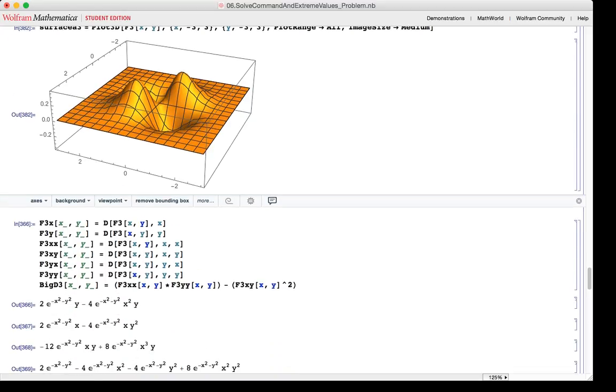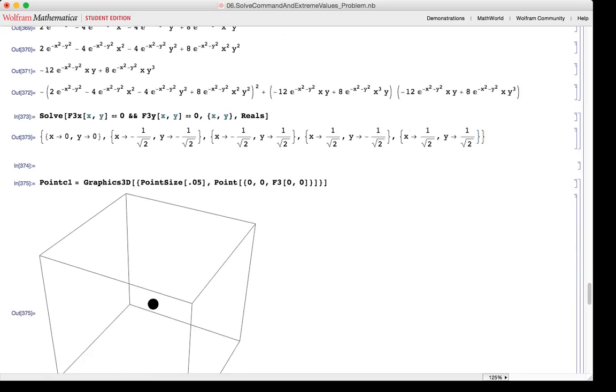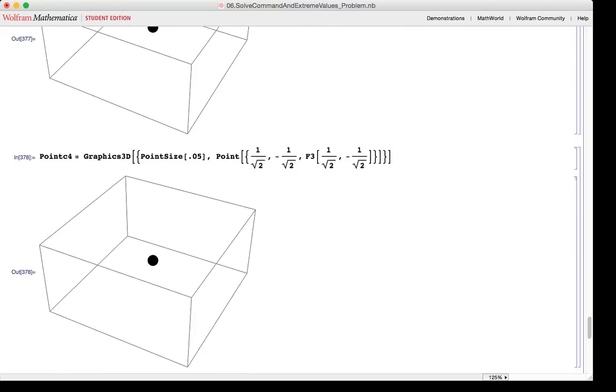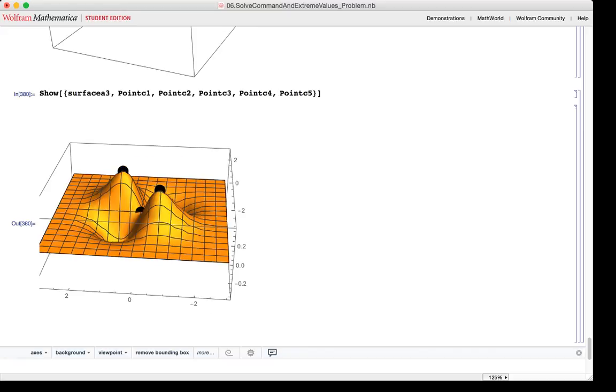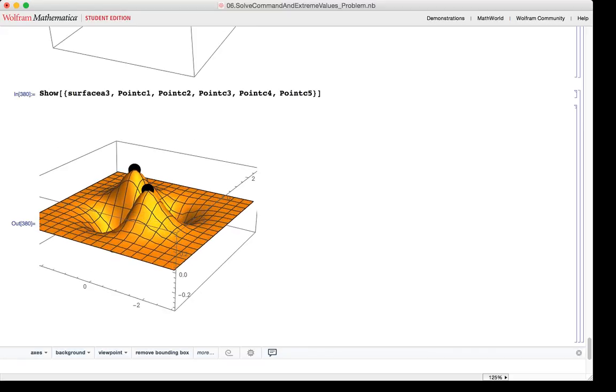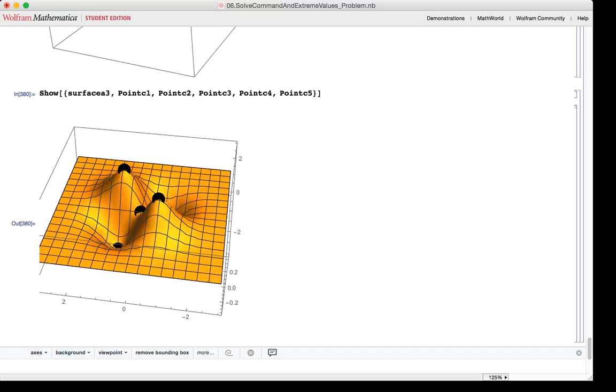Then all the derivatives for this function are taken. And the determinant of the Hessian is determined via the big D3. The solve command is thus utilized again, and five ordered pairs are resulting. These five ordered pairs are all graphed and are put on a plot together with the original function. As you can see, all these points are corresponding to min or maxes or saddle points.